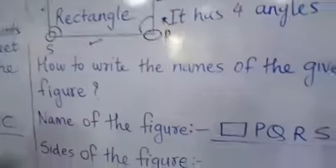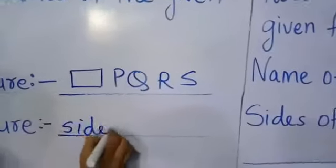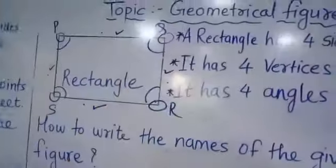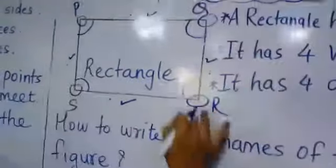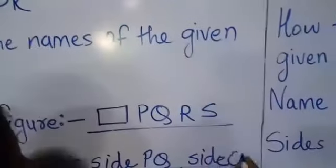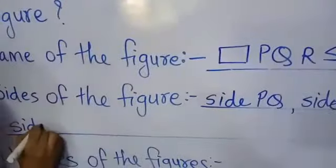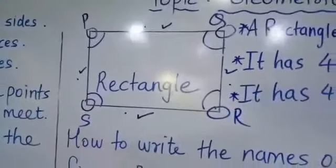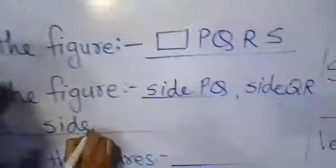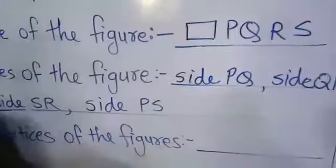Now the sides of the figure: side PQ, side QR, side SR, and side PS. There are four sides — you can count them: one, two, three, and four.